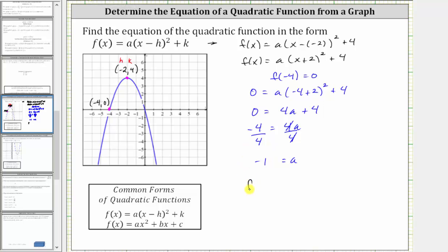And therefore the function must be f(x) equals a, which is negative one, times the quantity x plus two squared plus four. Sometimes instead of a negative one though, we'll just see a negative. We can also write f(x) as f(x) equals negative, or the opposite of, the quantity (x + 2)² + 4.